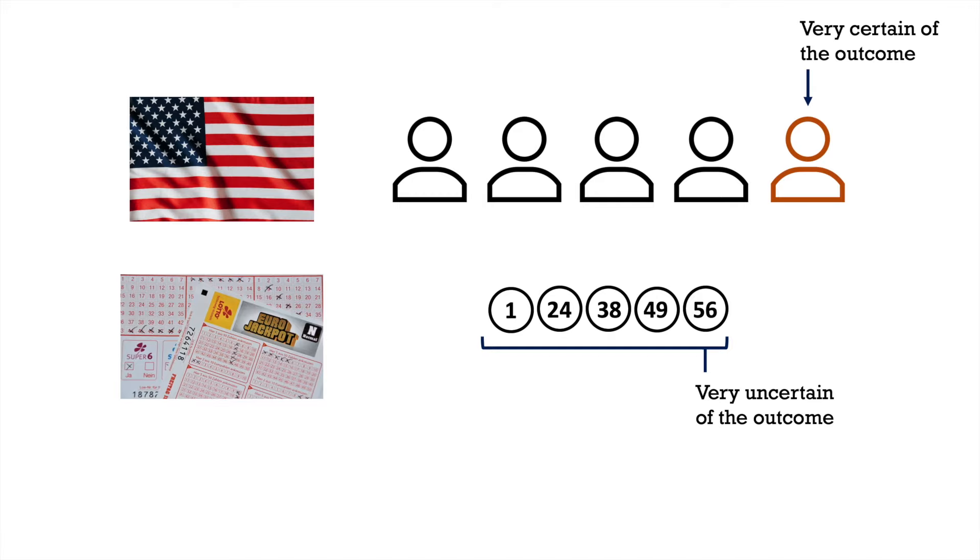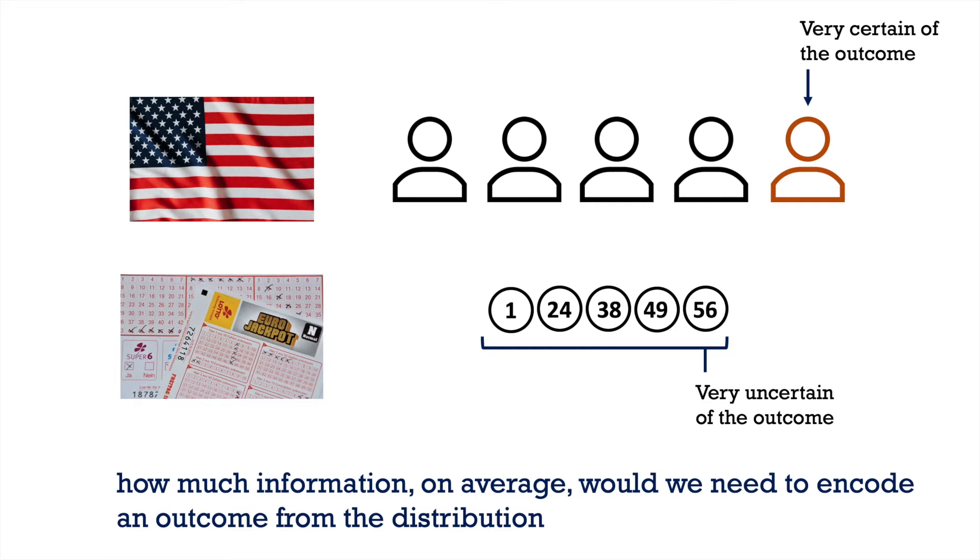Instead of asking, what is the uncertainty of a distribution, we can ask, how much information, on average, would we need to encode an outcome from the distribution?